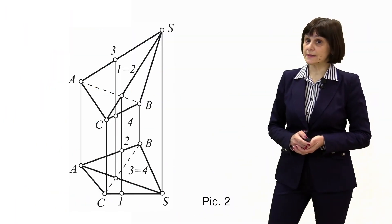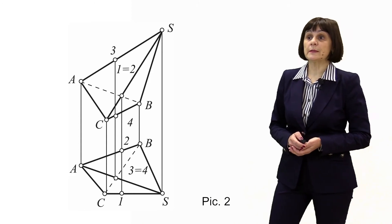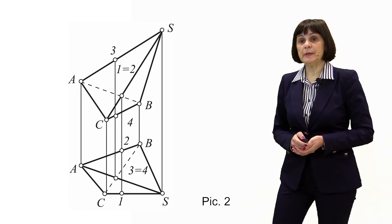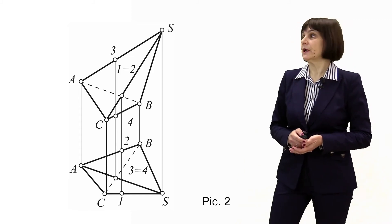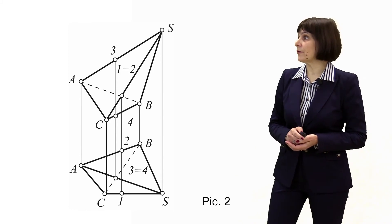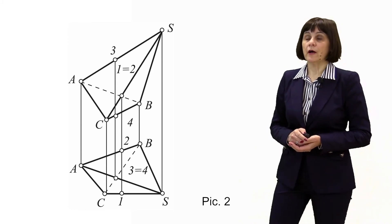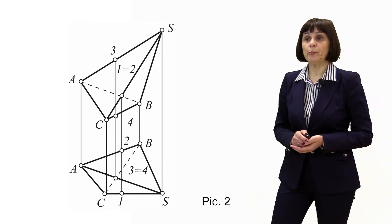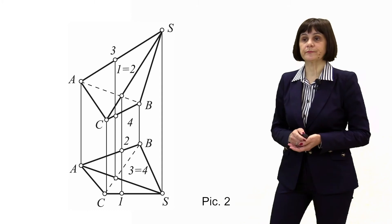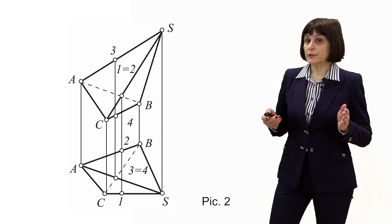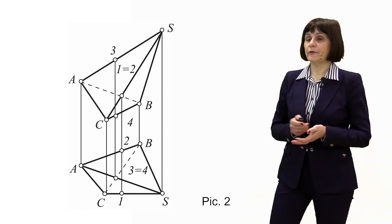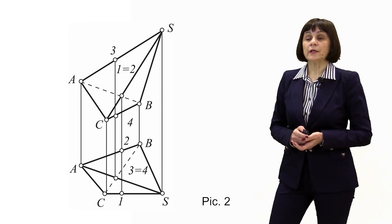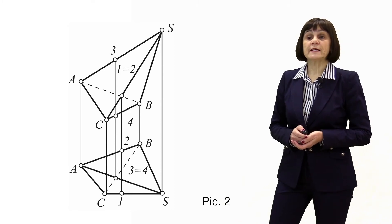Let's discuss an example. Determine the visibility of the edges of the SABC pyramid. We can see this pyramid on the drawing. From the drawing, it can be seen that the pyramid has a slope to the right. What can we say about this drawing? First of all, the lines bounding the outline of the drawing are always visible.